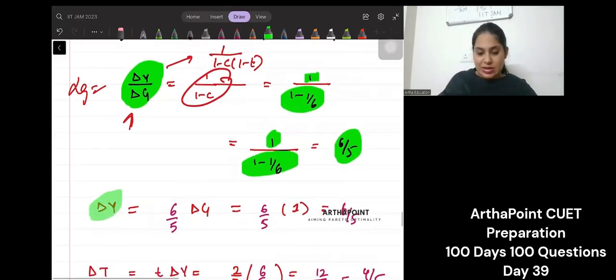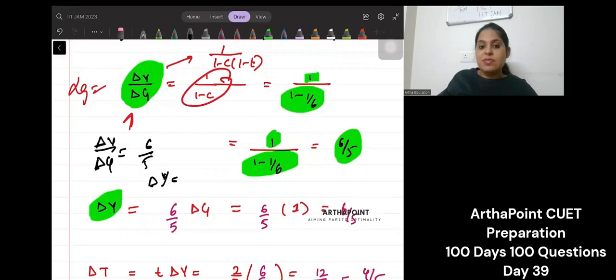Okay? Change in income by change in G is 6 by 5. So change in income will be 6 by 5 change in G and change in G is given as 1. So this will simply be 6 by 5.